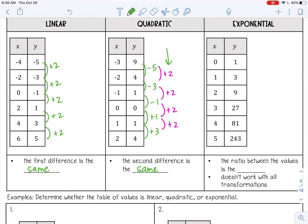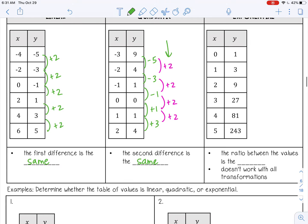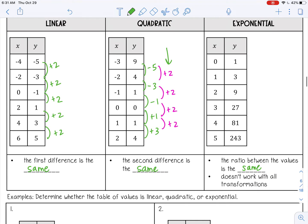But what you can do is see what the ratio is between consecutive y values, and the ratio between the values will be the same. Now this doesn't work for all of the transformations of an exponential graph, but pretty much, if you determine it's not linear and it's not quadratic, it's usually going to be exponential. There are other options as well, of course, but in this particular lesson it's going to be exponential. But let's look at those ratios.